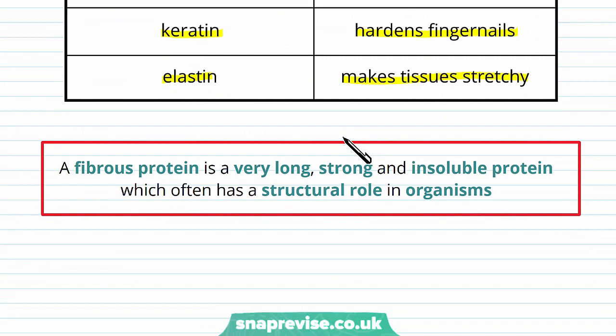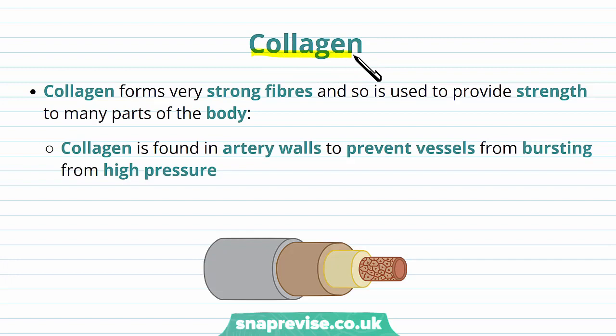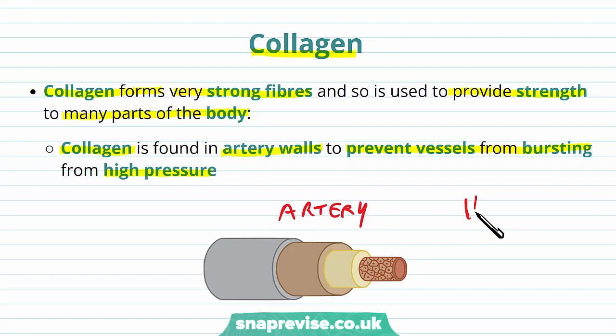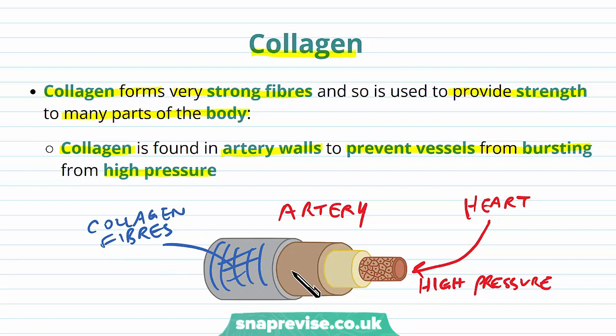A fibrous protein by definition is a very long, strong and insoluble protein which often has a structural role in organisms. Collagen is one of the most abundant proteins in the body, forming very strong fibers used to provide strength to many tissues. For example, collagen is found in artery walls — its strength allows the vessels to withstand the high pressure of blood pumped by the heart, preventing the artery from bursting open.